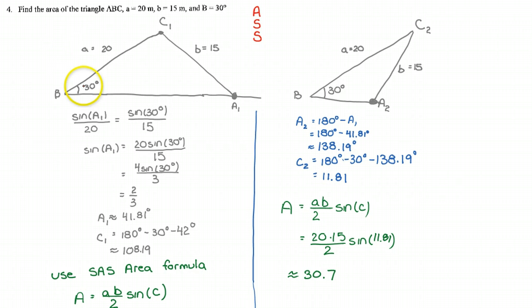Notice, if I look here at my first diagram, which we can call case 1, we'll call the second diagram case 2. The situation is such that I have angle B of 30 degrees, a length of A of 20, and a length of B of 15.